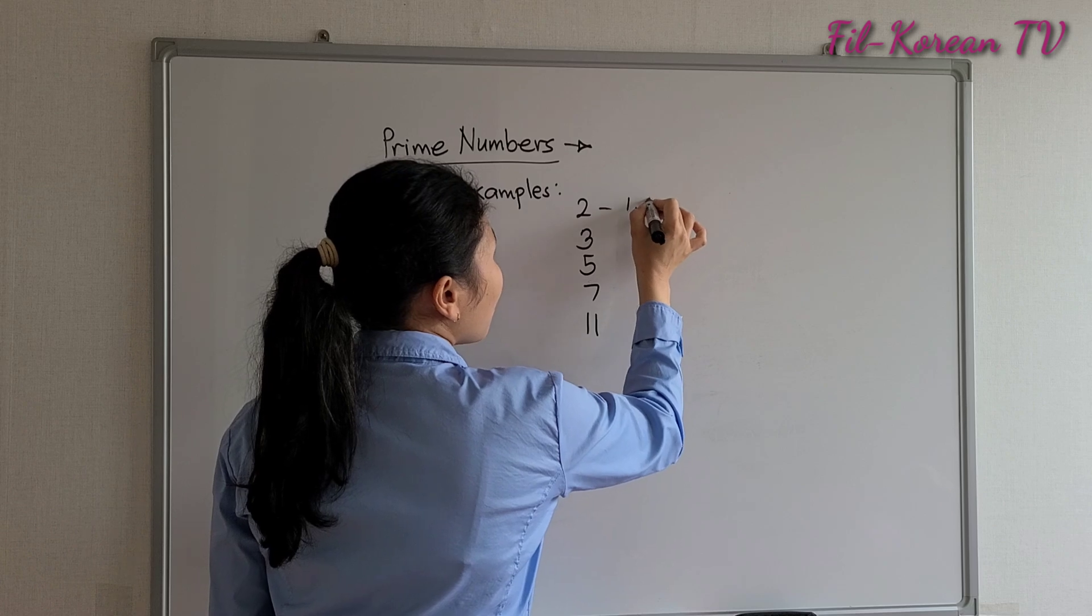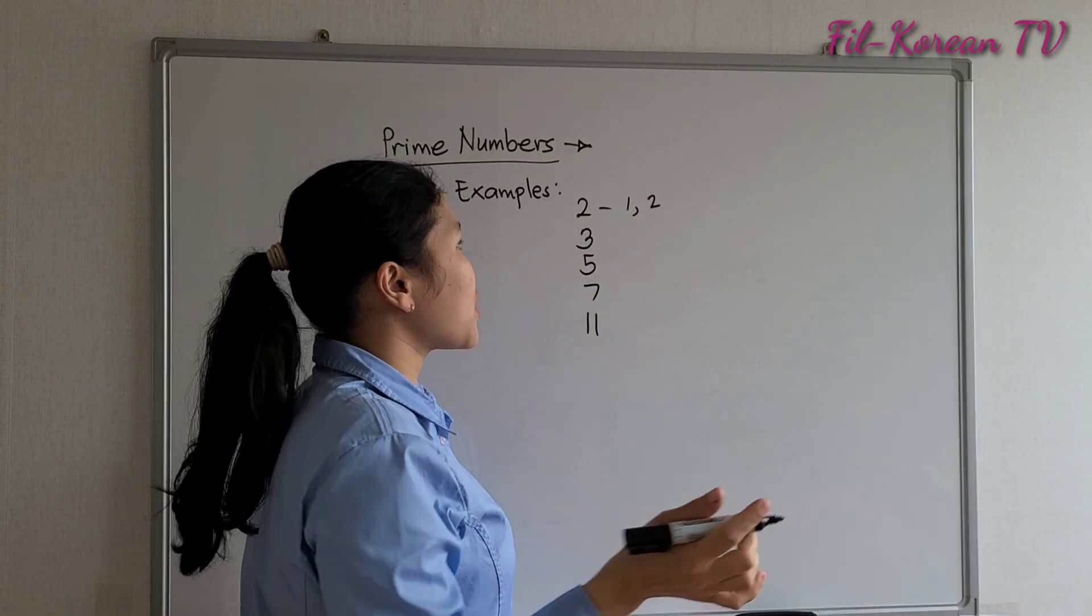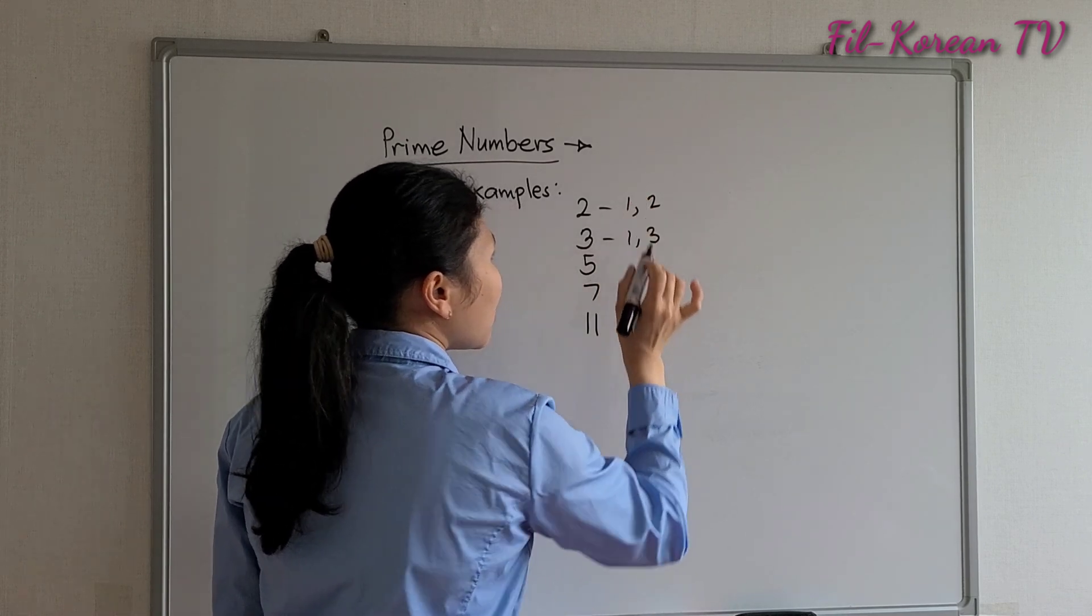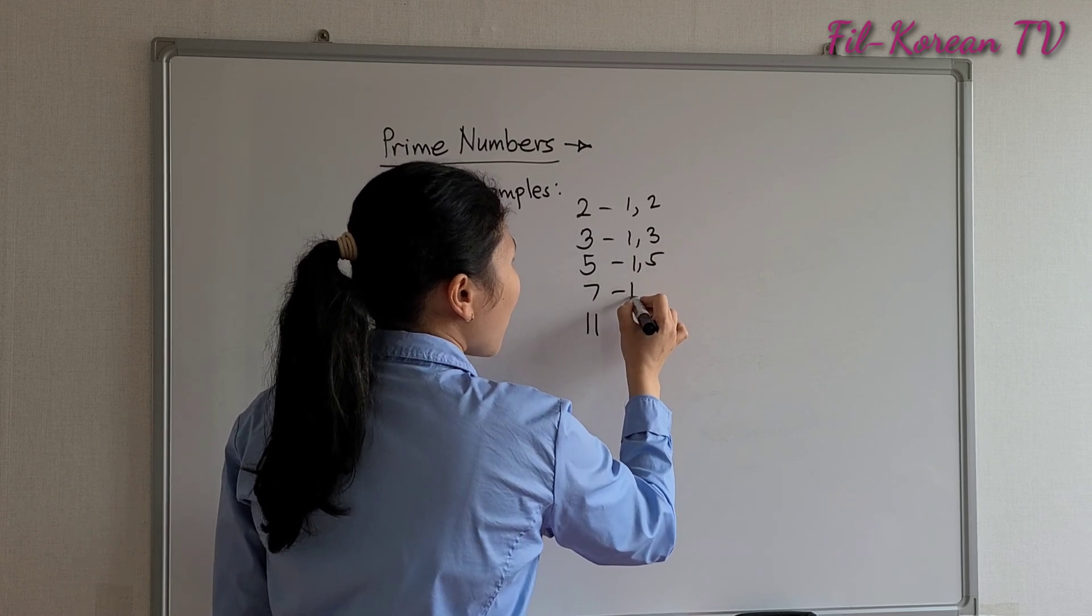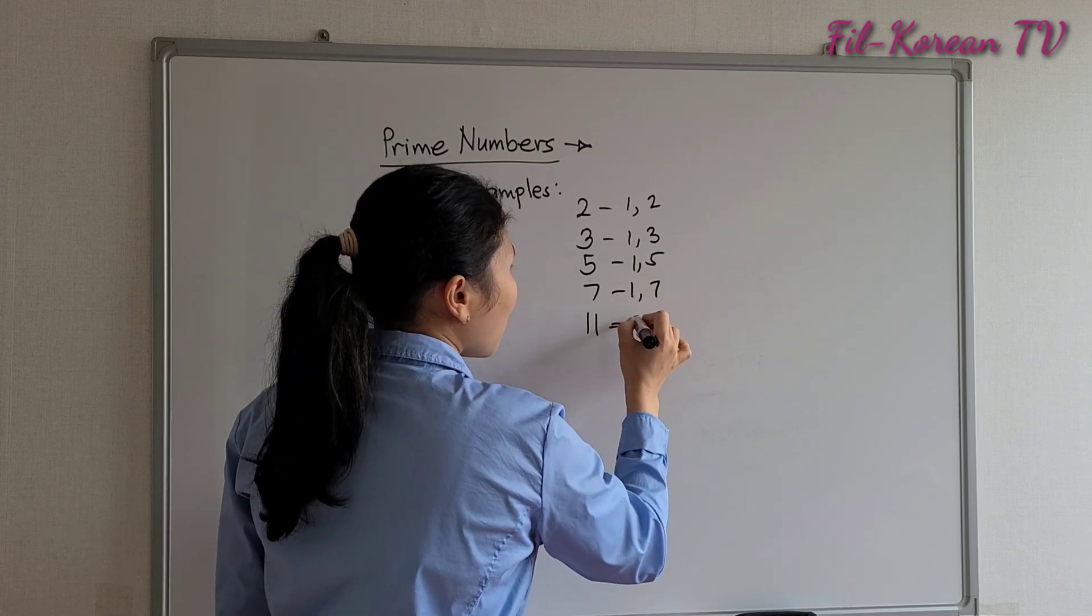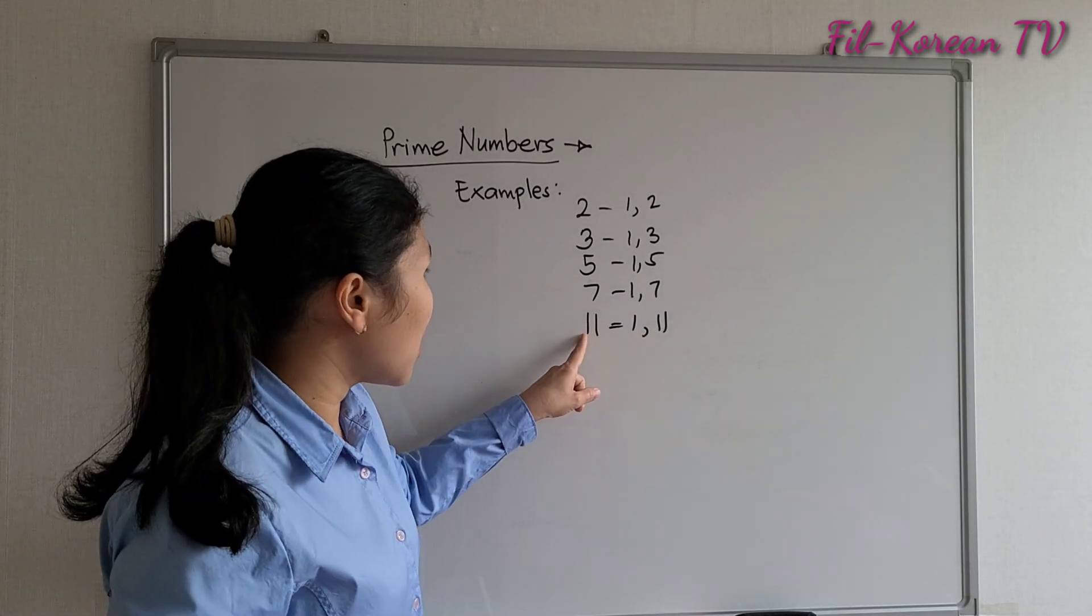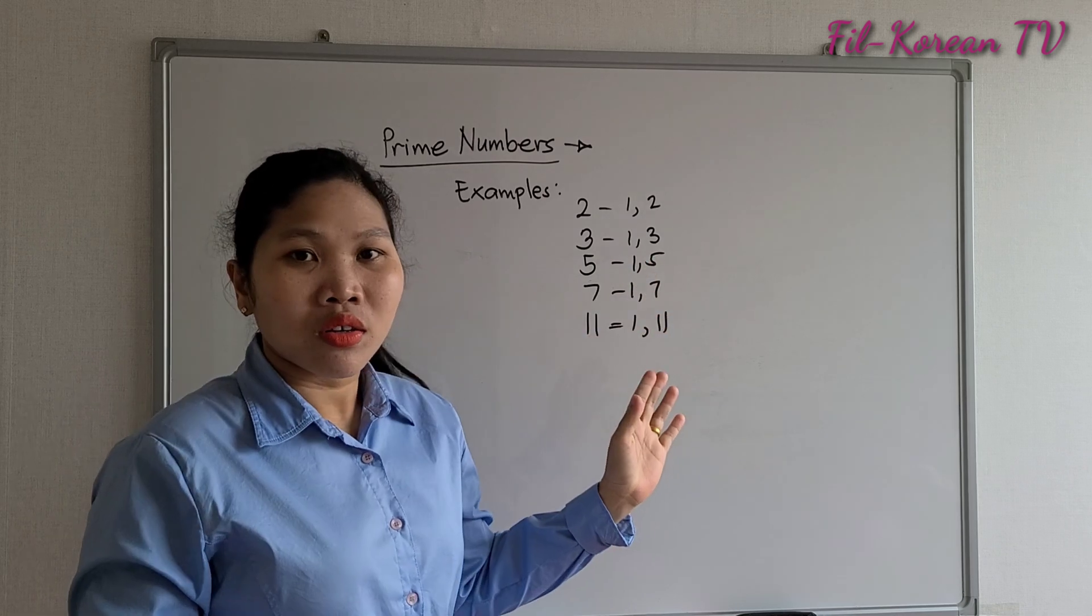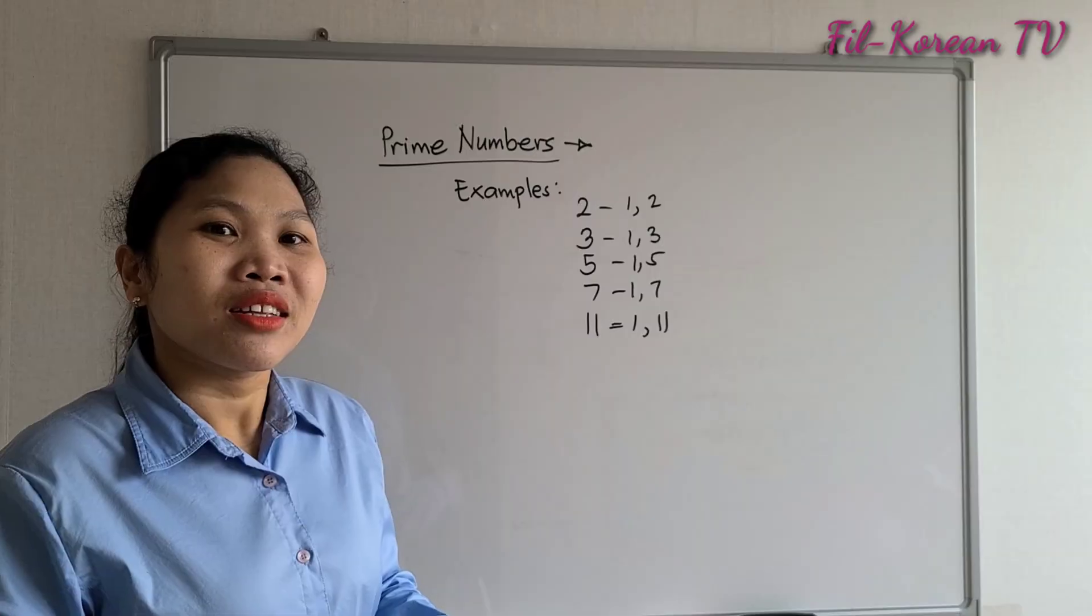Factors: one and two. One times two equals two. No more other factors. One and five, one and seven, one and eleven. So, two factors only. No more other numbers. One and the number itself.